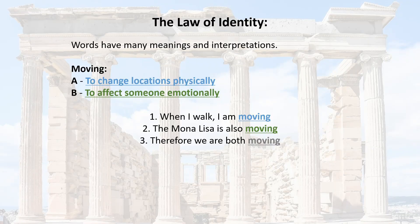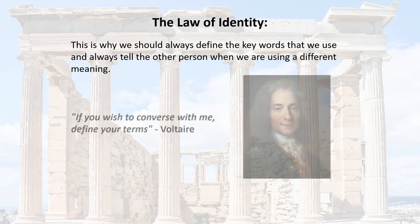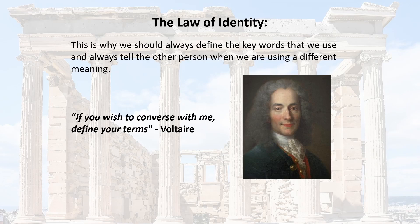If you don't specify, it's an error and you're just being manipulative. In the first sentence you're using definition A, so moving equals A. In the second you're using B, so moving equals B. And in the third it's both, or unclear — we don't know. This is why we should always define the keywords we use and tell the other person when we are using a different meaning. Voltaire is quoted as saying: 'If you wish to converse with me, define your terms.' This is how fundamental the law of identity is.